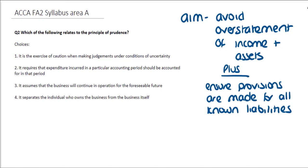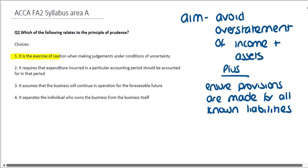To check the other statements: the second one says that it requires that expenditure incurred in a particular accounting period should be accounted for in that period — that's the matching principle, not relevant to prudence. The third option assumes that all businesses will continue in operation for the foreseeable future — that relates to going concern. And the fourth option separates the individual who owns the business from the business itself — that's the separate entity principle, so again not relevant to prudence. The correct answer is definitely the first option: the exercise of caution when making judgments under conditions of uncertainty.